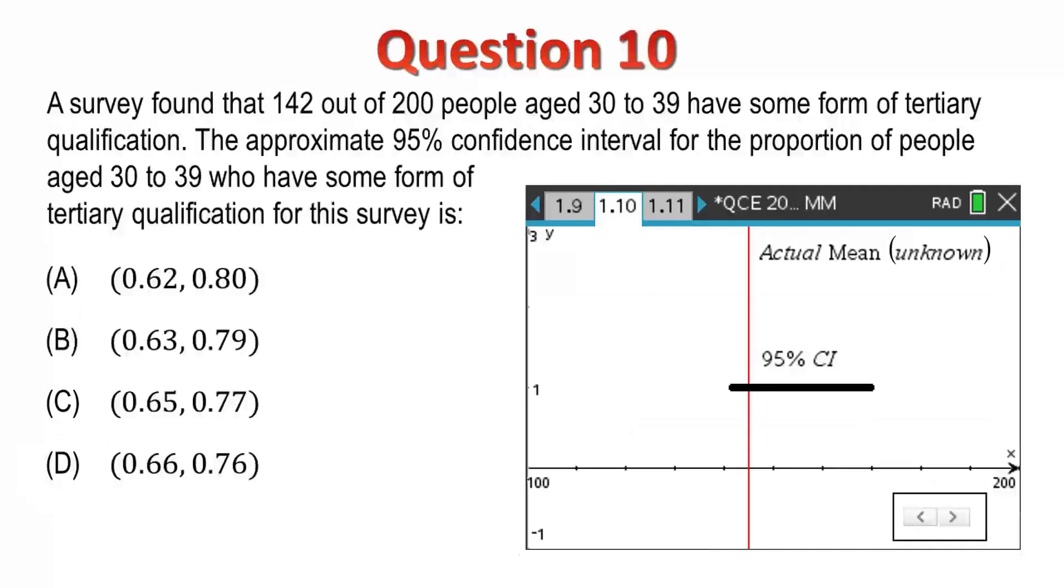Question 10. A survey found that 142 people out of 200 aged between 30 and 39 have some form of tertiary qualification. We are required to determine a 95% confidence interval for the actual proportion of the population in the same age group that have a tertiary qualification. To answer this question, we need to understand that our sample represents a point estimate of the true proportion and that these point estimates are approximately normally distributed around the true mean, assuming the necessary conditions regarding sampling have been met.